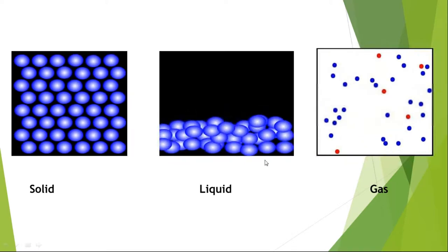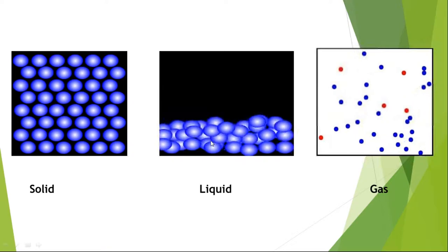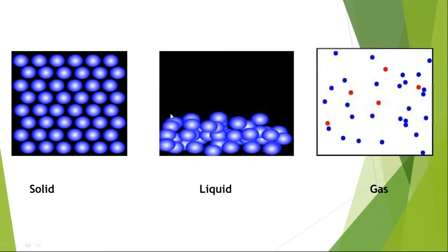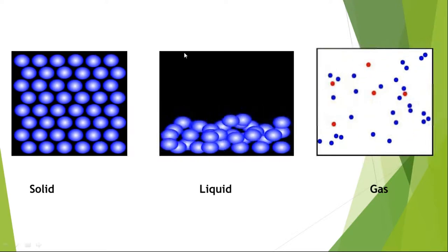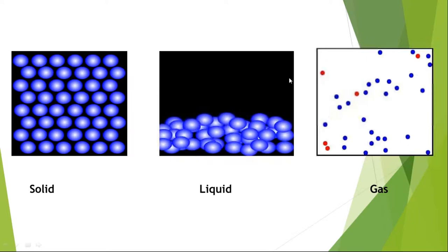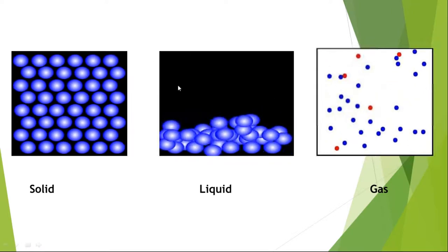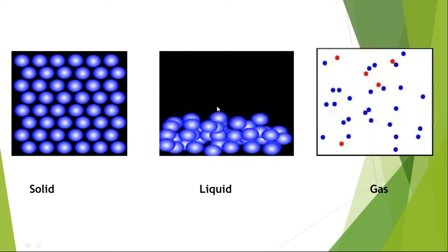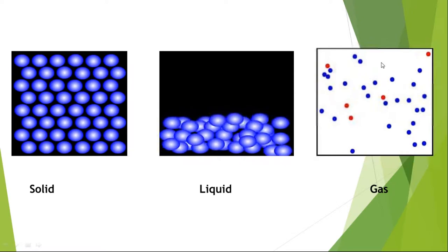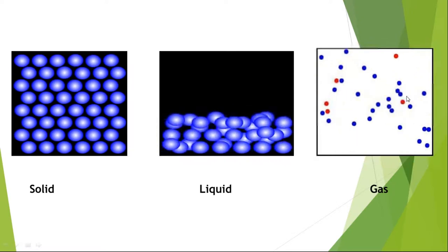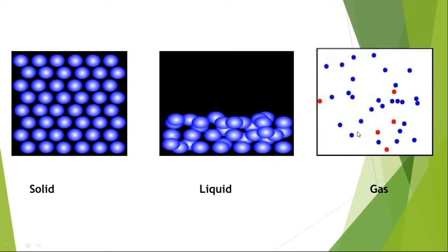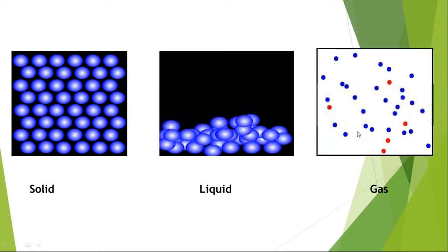In a liquid, the particles are moving around but within the liquid — they take up the container but move around just within the liquid. But in gas, the particles move in all directions of the container.